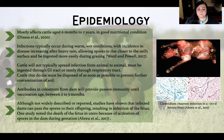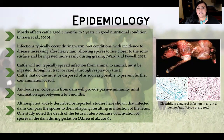So if cattle do die, they must be disposed of as soon as possible, either by completely burning the animal or covering it with lime and digging a very, very deep grave to try to keep those spores as far from the top of the soil as possible.